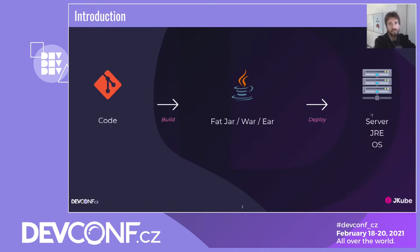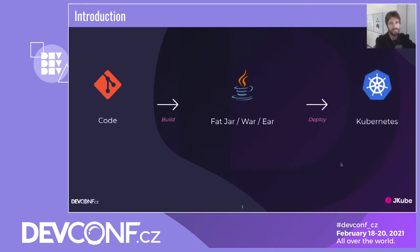This artifact would be delivered to your operations team, who would deploy it into a production server containing an operating system and a Java runtime environment. Many developers were not familiar with this last step because an operations team took care of all of this. But of course, the paradigm is changing in recent years and the platform of choice is now Kubernetes.